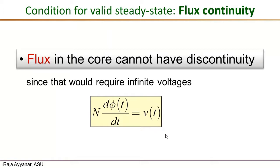That is the key requirement. When designing circuit topologies and control methods, we must ensure this rule is always satisfied — the flux must not have step changes. If a switching action creates a situation where the flux must change abruptly, that results in very large voltage spikes that will most likely destroy the MOSFETs and other switches and components.